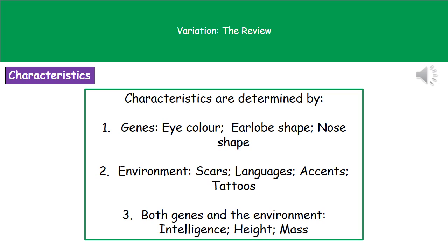The first is genes — this is what we inherit from our parents. Examples of characteristics determined by genes would be eye colour, earlobe shape, and nose shape.